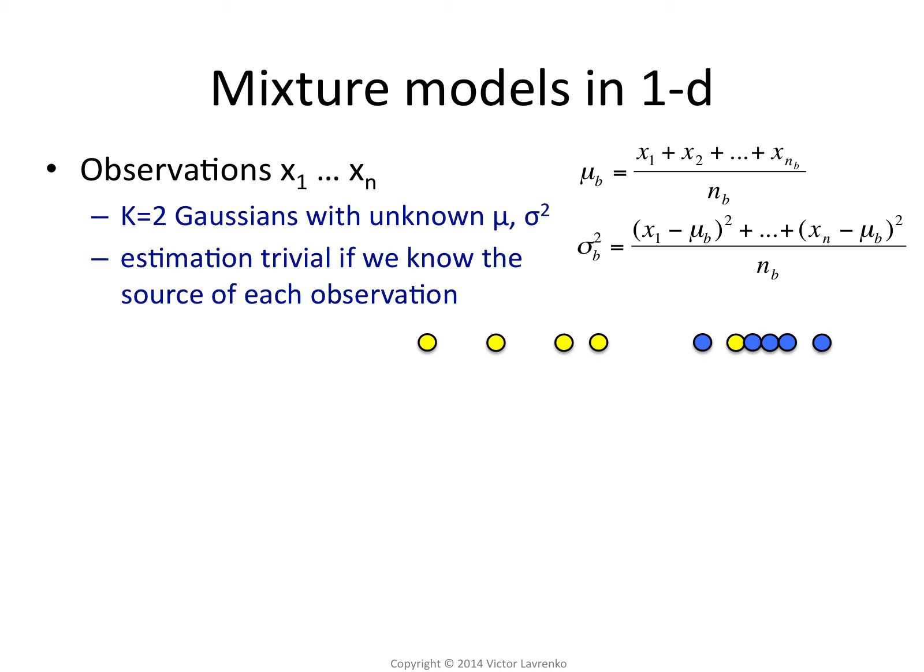And you do the same thing for the variance of the Gaussian. For the points that are blue, you subtract the blue mean from them, add up the square differences, divide, and you get the variance. So you could do that, and you'd get a pretty good representation of what a blue Gaussian looks like and what a yellow Gaussian looks like.